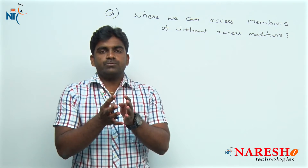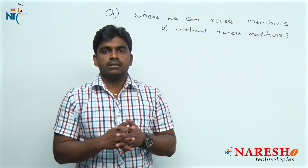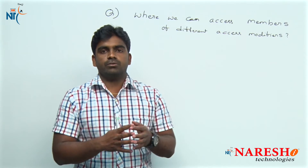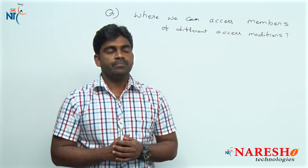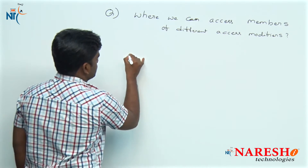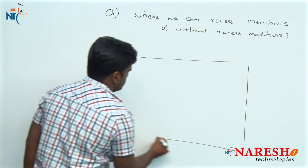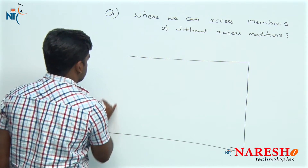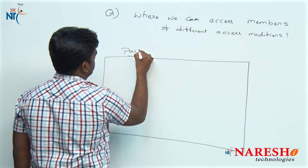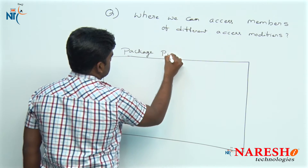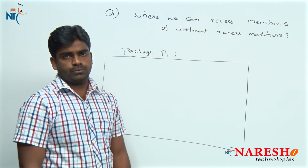Once we apply all the access modifiers, what are the bounds of accessing them? To understand clearly, we are taking two packages. The first package is P1, and a package contains a related group of classes, as we know.